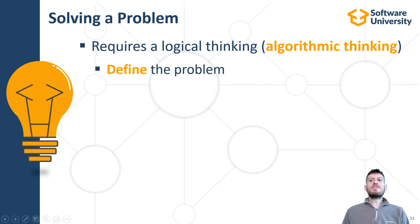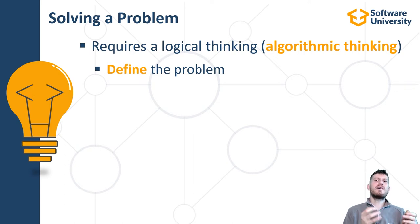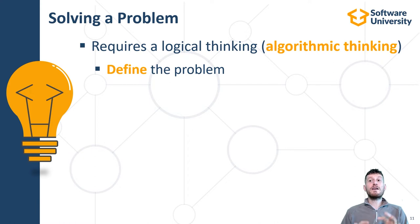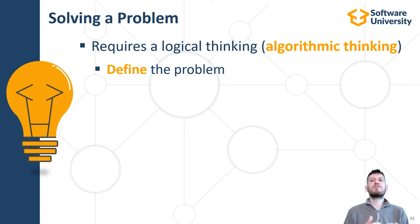Defining the problem is the first stage in problem solving. In software engineering, this stage is known as gathering requirements. Without well-defined requirements, writing software will be impossible or quite confusing. For bigger projects, there is a role called requirements analyst or business analyst, who works with the customer to collect, analyze and organize the business requirements and describe them in a form understandable to the technical team.